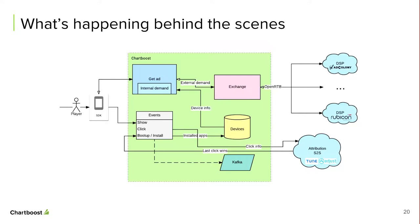Before the events path, two additional things happen in the get-ad path: frequency capping and negative targeting. Marketers want to control how many times an ad is shown to a device and may not want to show an ad if the device already installed that app. To support these use cases, we load the last seven days of impression, click, and install data into a super-fast key-value store — we use Aerospike for that.